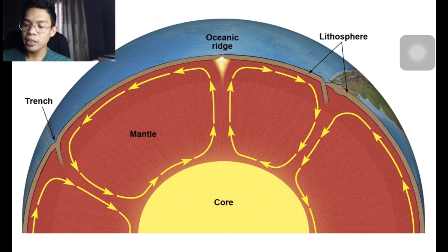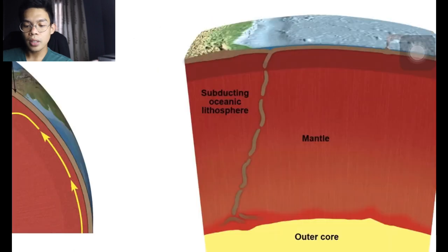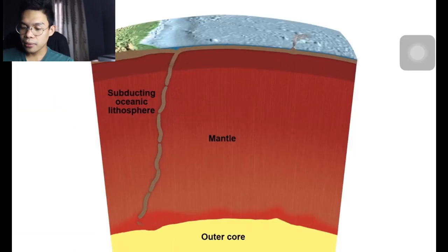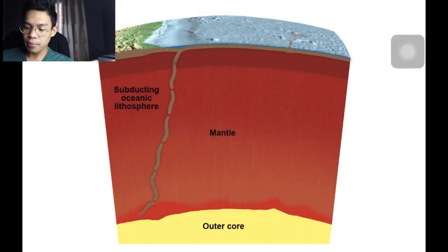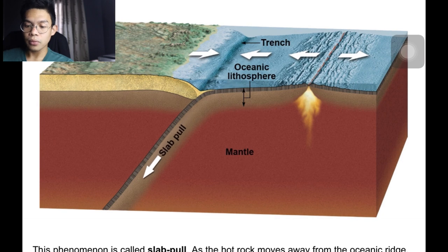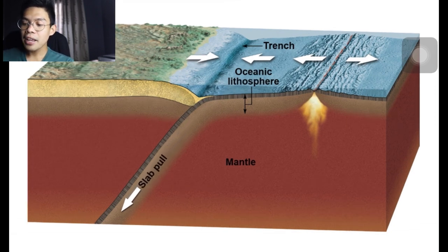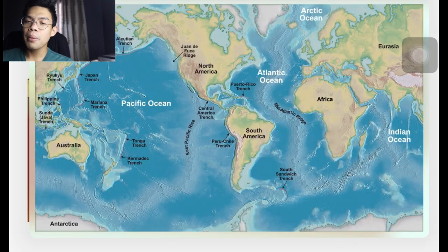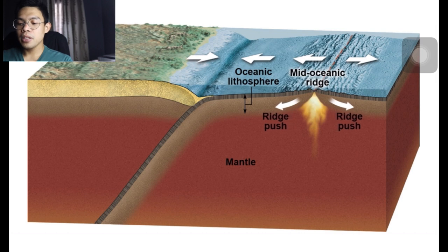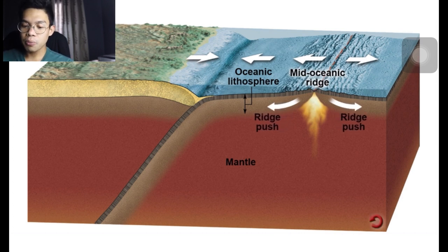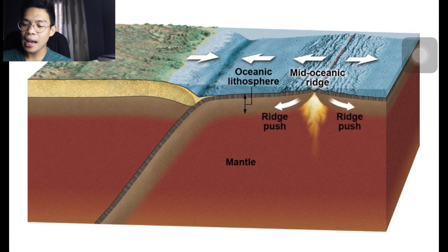We now know that lithospheric plates are more than just passengers riding on mantle convection flow. Subducting oceanic plates are denser than the upper mantle and drive the downward part of the convective flow. As this cold, dense slab of oceanic lithosphere sinks into the mantle, it pulls the trailing plate down — a phenomenon called slab pull. Slab pull is thought to be the primary force driving plate motions. Another important driving force is ridge push, where due to gravity, newly created oceanic lithosphere literally slides down the flanks of the ridge. Ridge push is considered less of a factor in plate motion than slab pull.